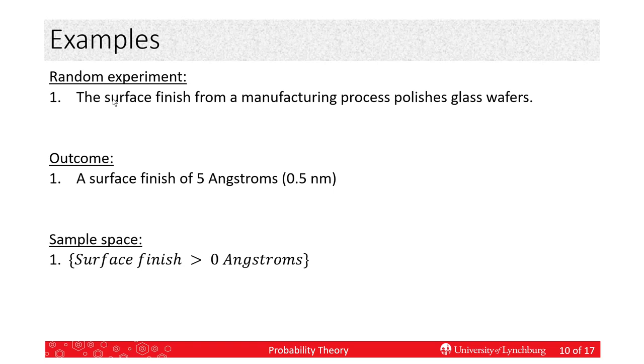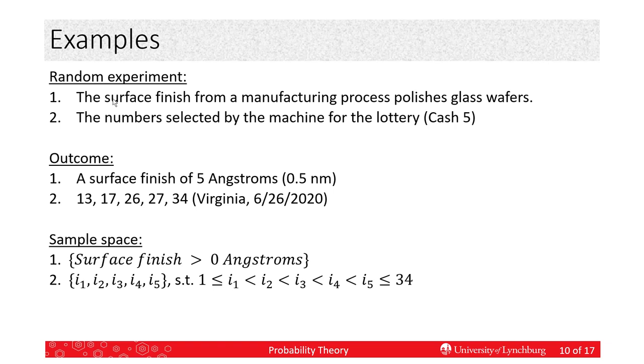What about the number selected by the machine for the lottery, the Virginia Cash 5 lottery? So, one of the outcomes may be from, this is given from 626 of 2020. So, 13, 17, 26, 27, and 34. Notice they're put in order. That's how they publish them on their website. So, I can write the sample space, is all of the sets of five numbers, assuming they're integers, between 1 and 34, in order. So, that's why I've put this, the less than signs here. There's another way to write it, but this is one easy way to write it.